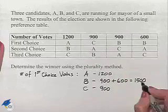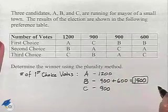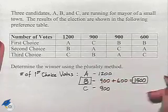And so using the plurality method, we'll take the greatest number of votes, 1,500, and declare candidate B the winner.